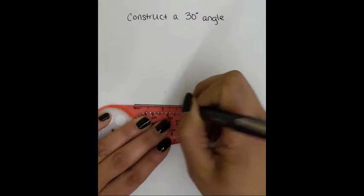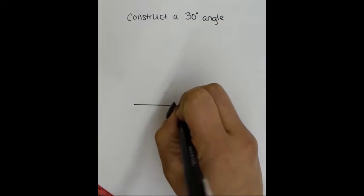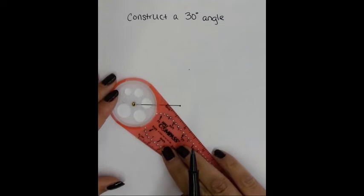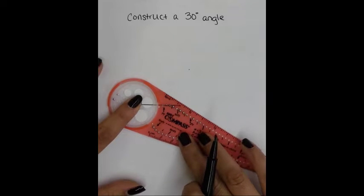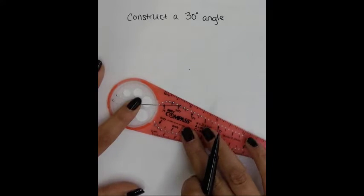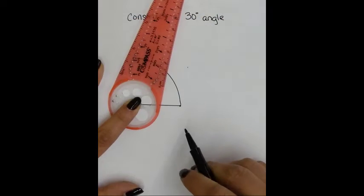So first I'm going to draw a line segment to represent the base of my triangle. And then I'm going to use the end points in order to construct the other two segments. So the eye goes on my first segment, on my first end point, radius on the other, and I'm going to draw an arc straight up.